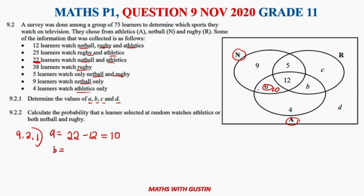Value b is between rugby and athletics. Rugby and athletics gives 25 learners. We remove those also watching netball, so b equals 25 minus 12, leaving us with b = 13.